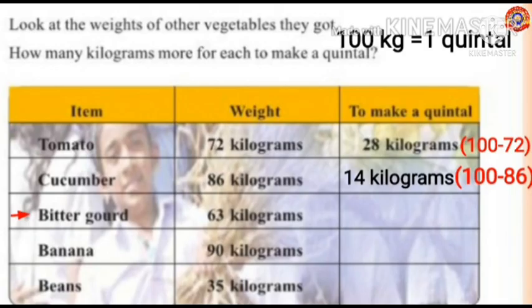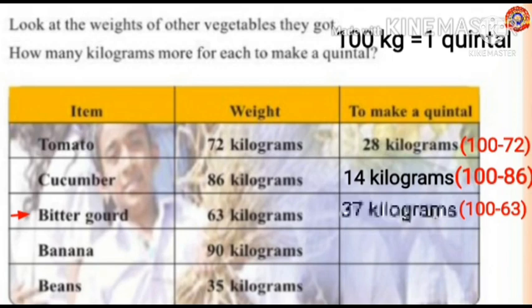Next, bitter gourd. How much is the weight of bitter gourd? 63 kilograms. Let's find how many more kilograms are needed for bitter gourd to make a quintal. To find out, subtract 63 from 100: 100 minus 63 equals 37. To make a quintal, 37 kilograms are needed.